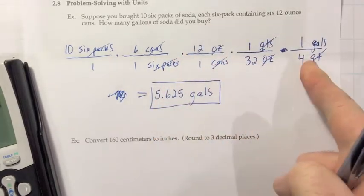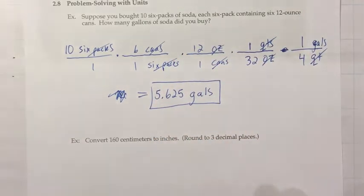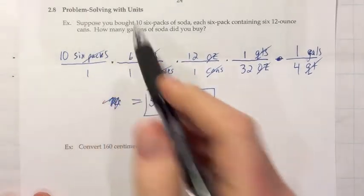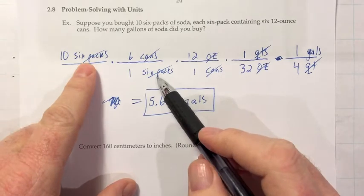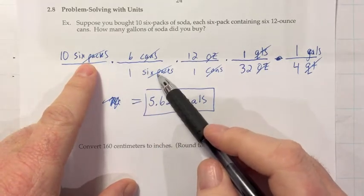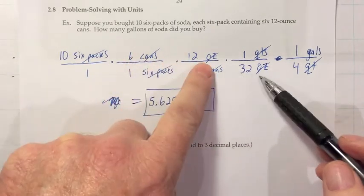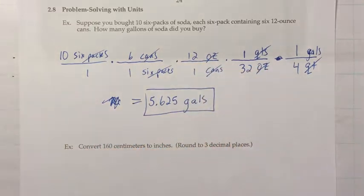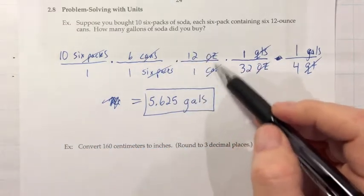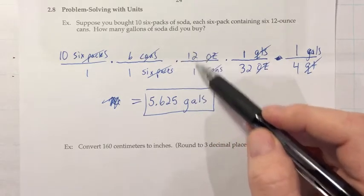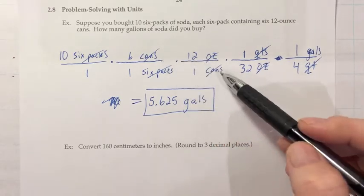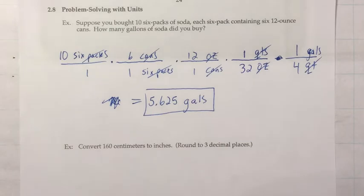Five point six two five gallons. So one, two, three, four different conversion factors. But really, they call this section the problem solving with units, because I'm really focusing on the units. I want six-packs to cancel. I want cans to cancel. I want ounces to cancel. I want quarts to cancel. And just always making sure I set up these numbers by thinking about where the units go first, and then filling in the number second. And paying attention to I want the units to cancel, and I want to move closer and closer to gallons.